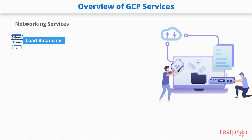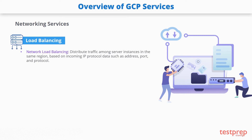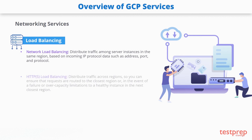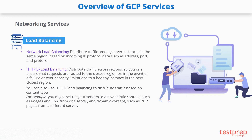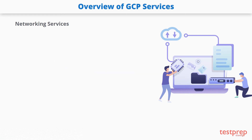The next networking service is load balancing. When your website or application is running on Compute Engine, you may need to distribute the workload across multiple instances. With network load balancing, you can distribute traffic among server instances in the same region based on incoming IP protocol data such as address, port, and protocol — a great solution for handling increasing traffic. HTTPS load balancing enables you to distribute traffic across regions, routing requests to the closest region or to a healthy instance in the next closest region during failures. You can also use HTTPS load balancing to distribute traffic based on content type, for example directing static content like images and CSS from one server and dynamic content like PHP pages from another.